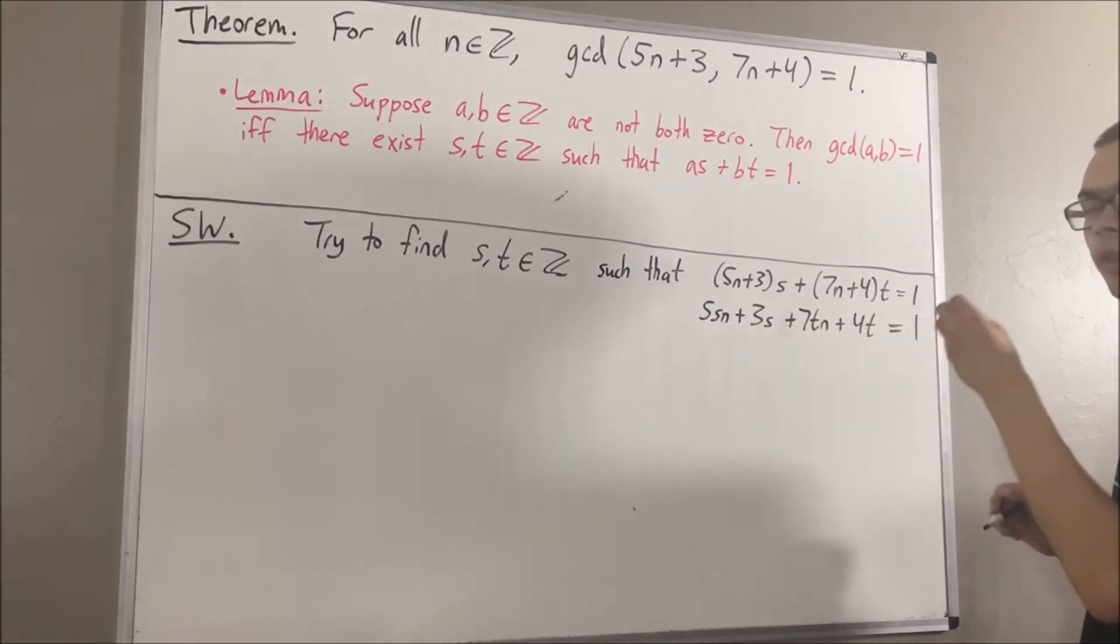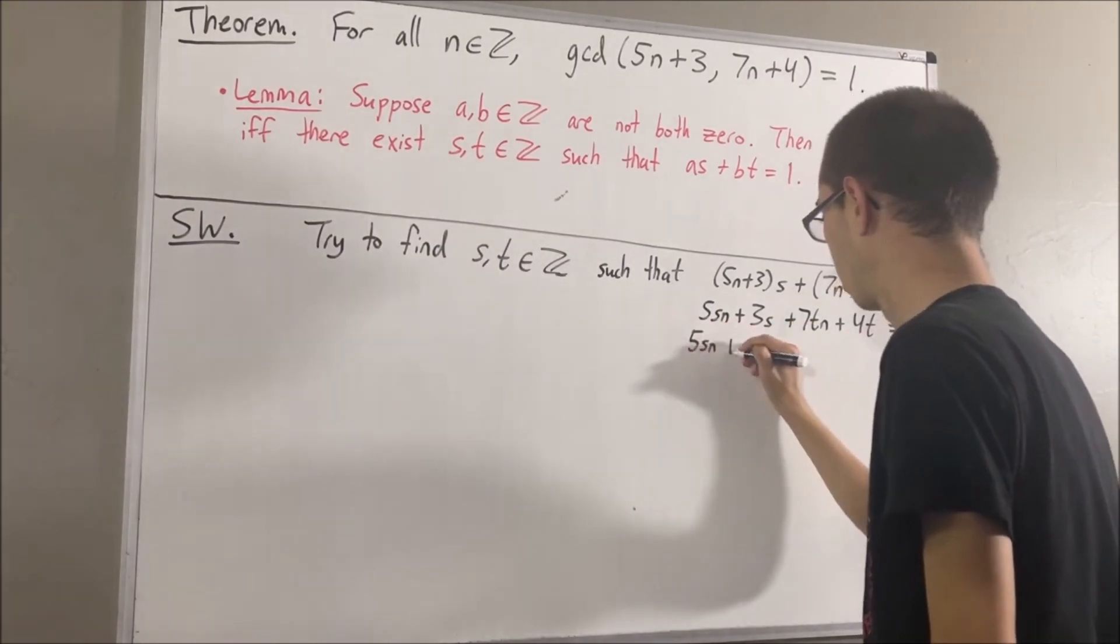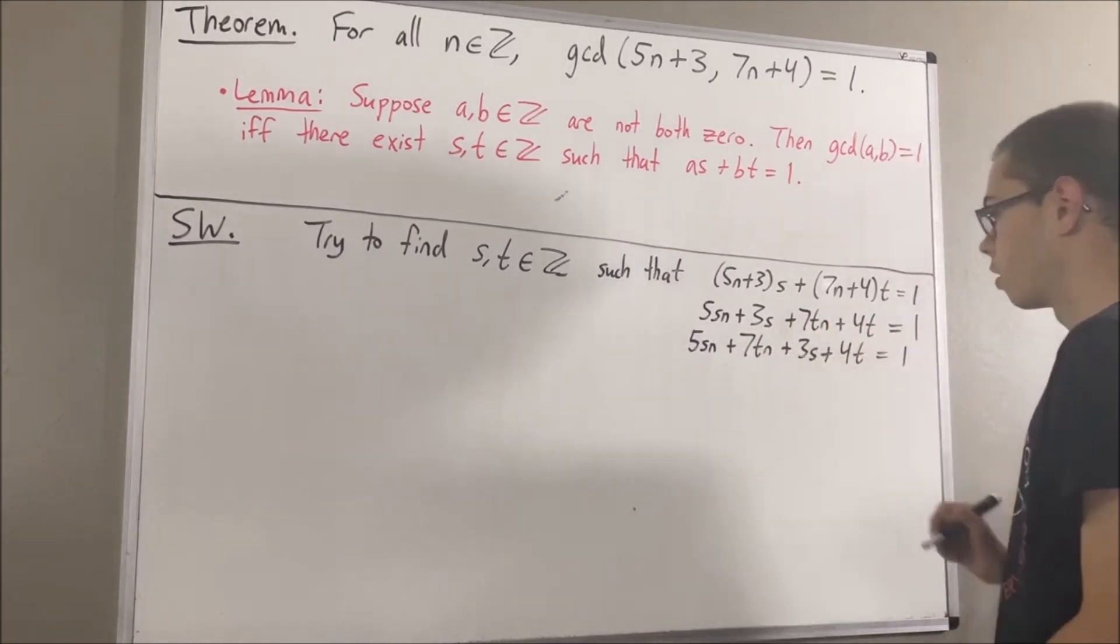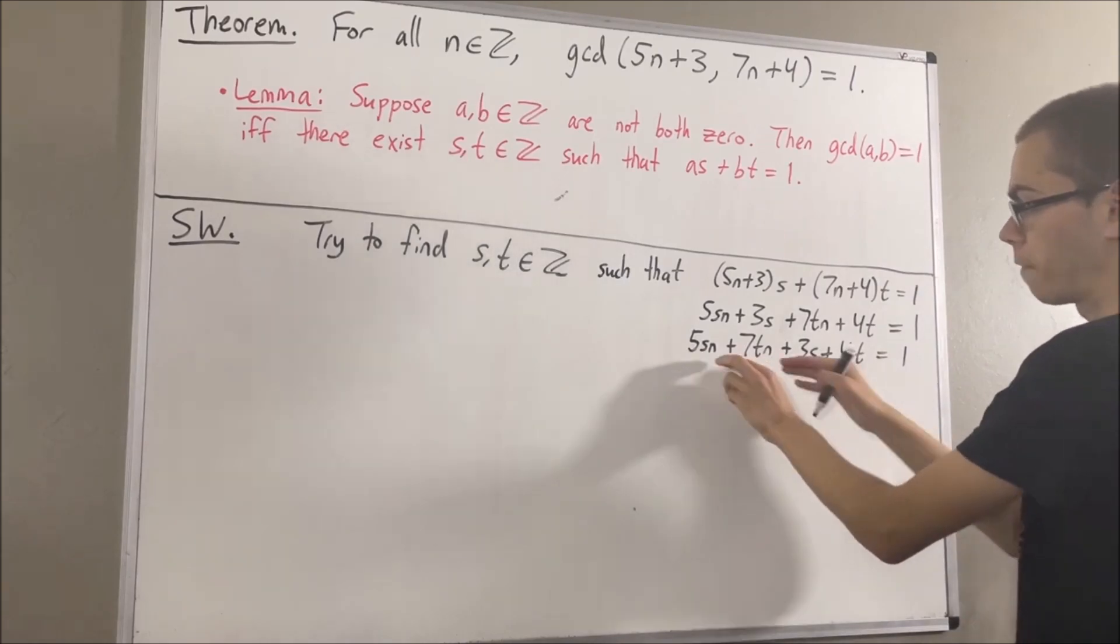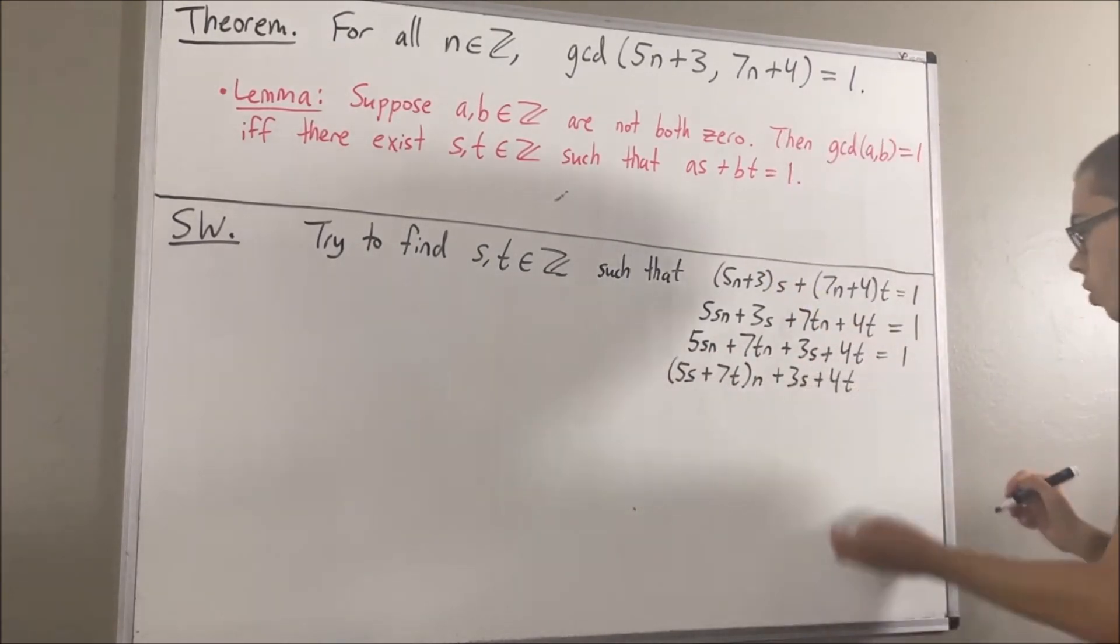But now, let's group together the terms that have n in it, and let's group together the terms that don't have n. From the terms that have n, I'm just going to factor out the n.